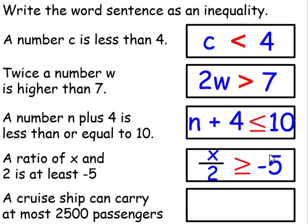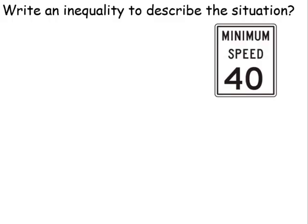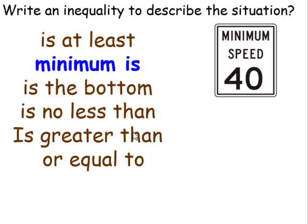A cruise ship can carry at most 2,500 passengers. The inequality symbol is less than or equal to, so the inequality is p is less than or equal to 2,500. There are actually some places that have a minimum speed limit along with a maximum speed limit. In this case, you have to drive 40 miles or over, so the inequality is x is greater than or equal to 40.